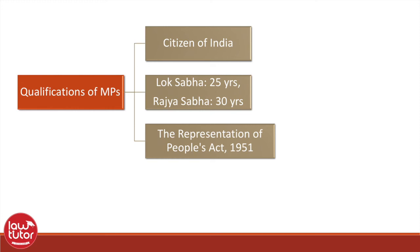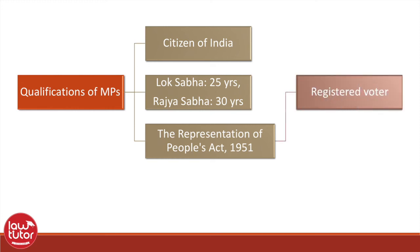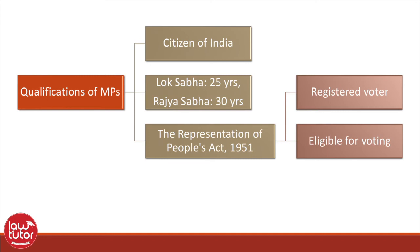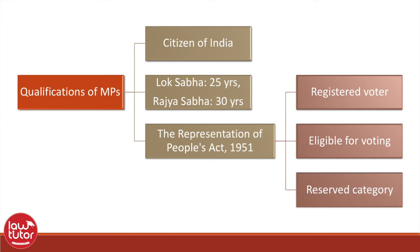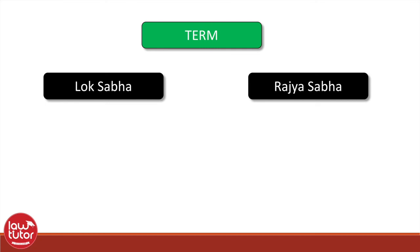Under the Representation of People's Act, it is required that the person's name should be registered as a voter in any constituency. The registered voter must also be eligible for voting. There is a difference between being a registered voter and being eligible for voting — if due to any reason the person is not eligible to vote, for example if he is jailed, then he cannot contest parliamentary elections. Only a person from a reserved category can contest from a reserved seat. The Constitution does not prescribe any educational qualifications for membership of the house.